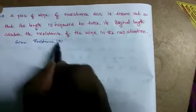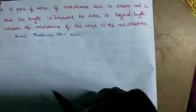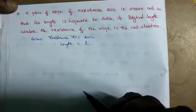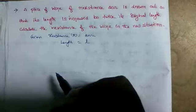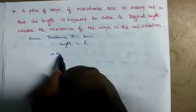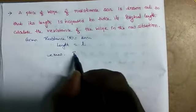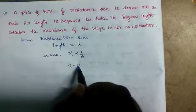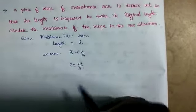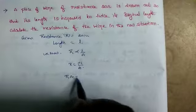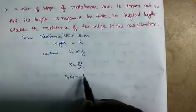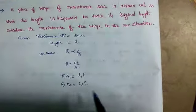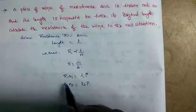Given: resistance R equals 20 ohms. We know the formula R is proportional to l by A, so R equals rho times l divided by A. For two situations: R1·A1 equals rho·l1, and R2·A2 equals rho·l2. Since rho is constant, we can set up a ratio.